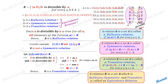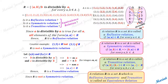Any relation satisfying all three conditions is called an equivalence relation. Here, since the relation failed to be symmetric, this is not an equivalence relation.